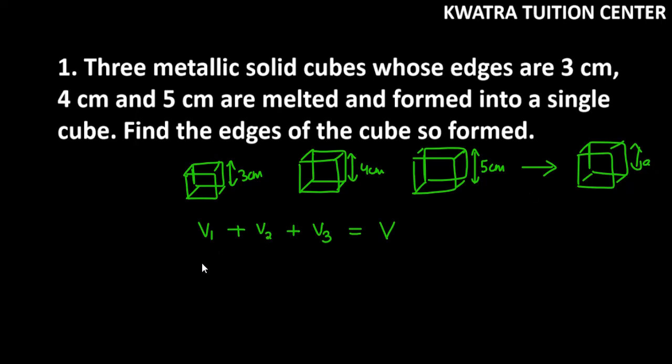Now V1 is 3 cube, V2 is 4 cube, V3 is 5 cube. Then the last one will be a cube.